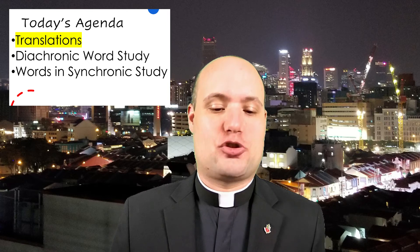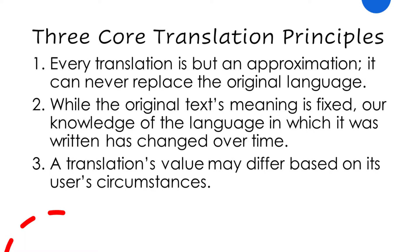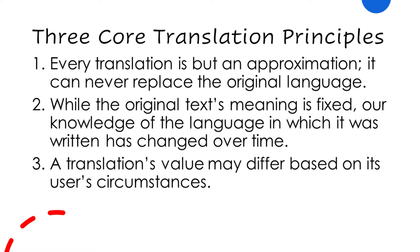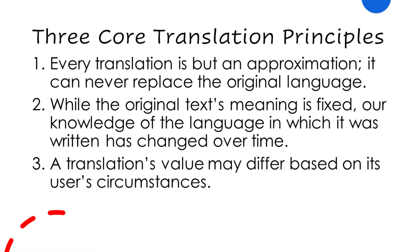So with all that as background, let's look at translations. There are two basic translation philosophies, but first I want to give you three core translation principles. First, every translation is but an approximation — it can never replace the original language. Second, while the original text's meaning is fixed, our knowledge of the language in which it was written has changed over time. This is why, as a scholar, I generally want my students to use translations produced within the last 30 or so years, since they've been produced in light of the latest research in ancient Hebrew or Greek grammar and lexicography. We simply know more about these languages than we did even 60 years ago, much more so than with the Douay-Rheims or King James Version. Third, a translation's value may differ based on its users' circumstances.